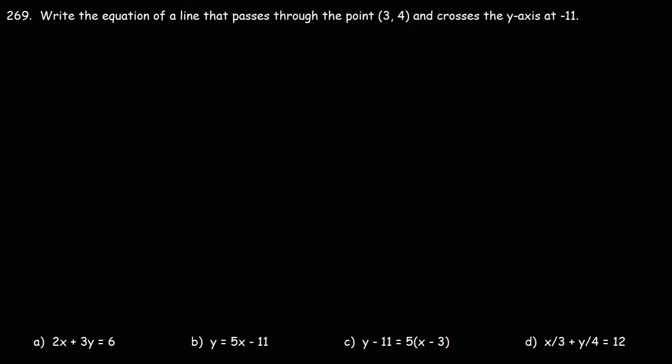Number 269, write the equation of a line that passes through the point (3, 4) and crosses the y-axis at negative 11. Feel free to pause the video if you want to try this.